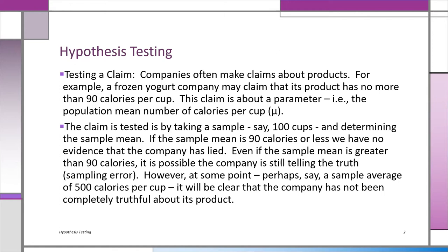What happens if it's more than 90? The question is how much more — it could be slightly more or a lot more. In statistics, we have to do a test to ascertain whether the company has basically lied about their yogurt. If it's 90.1 calories, probably they're not lying — that could be sampling error. But suppose it's 500 calories a cup. Then even a non-statistician would say there's no way their yogurts have less than 90 calories when the sample of n equals 100 found an average of 500. It's clear the company has not been telling the truth.